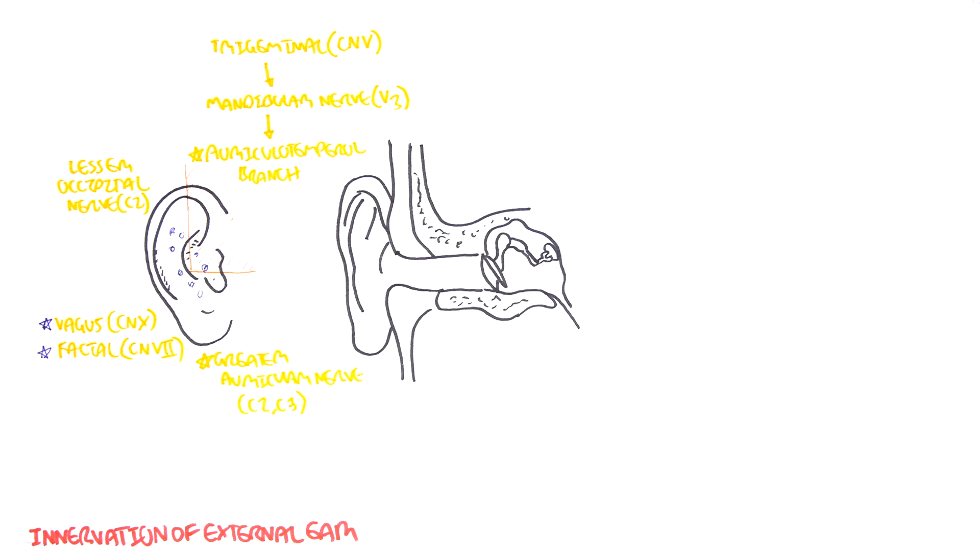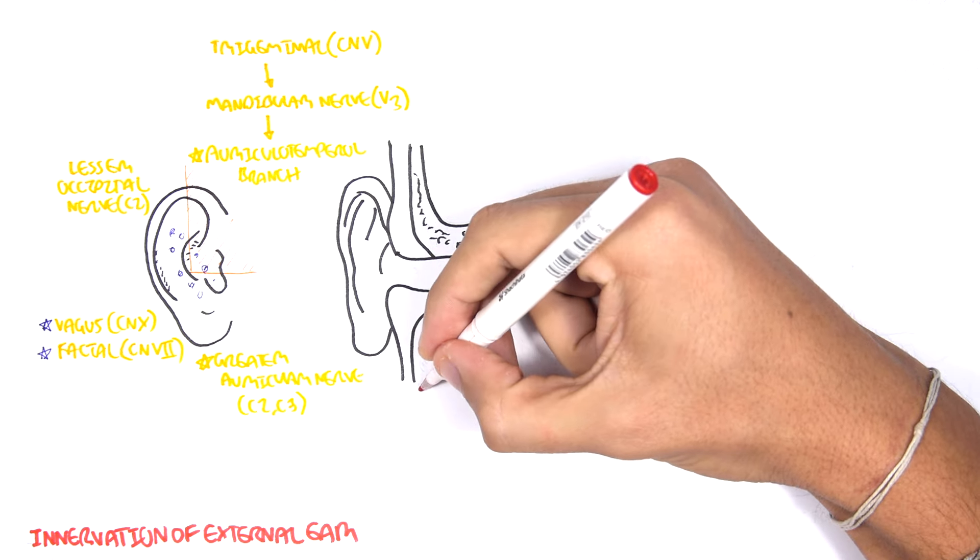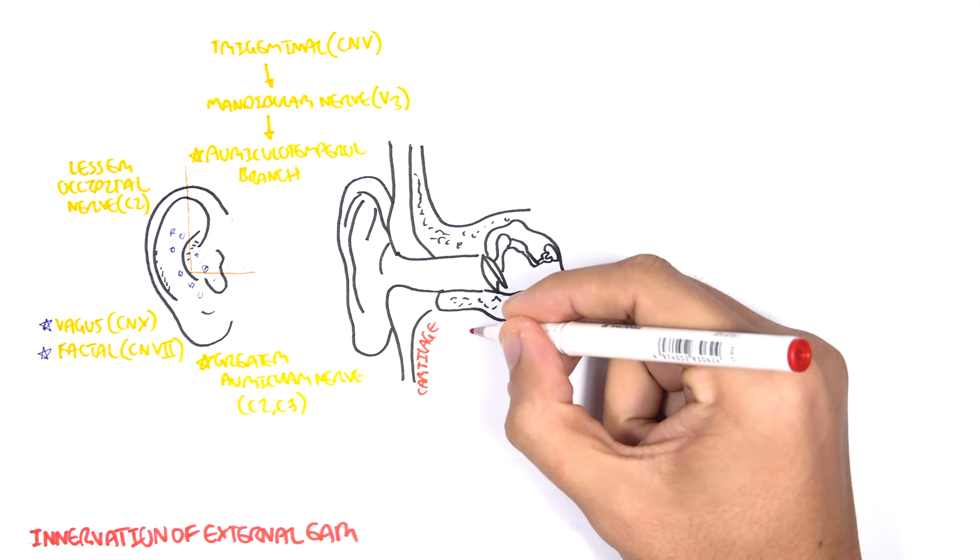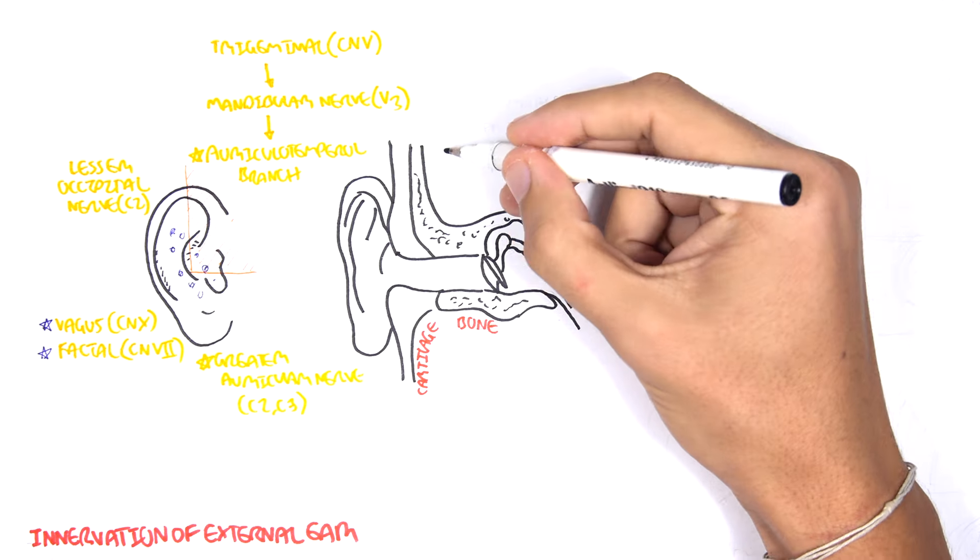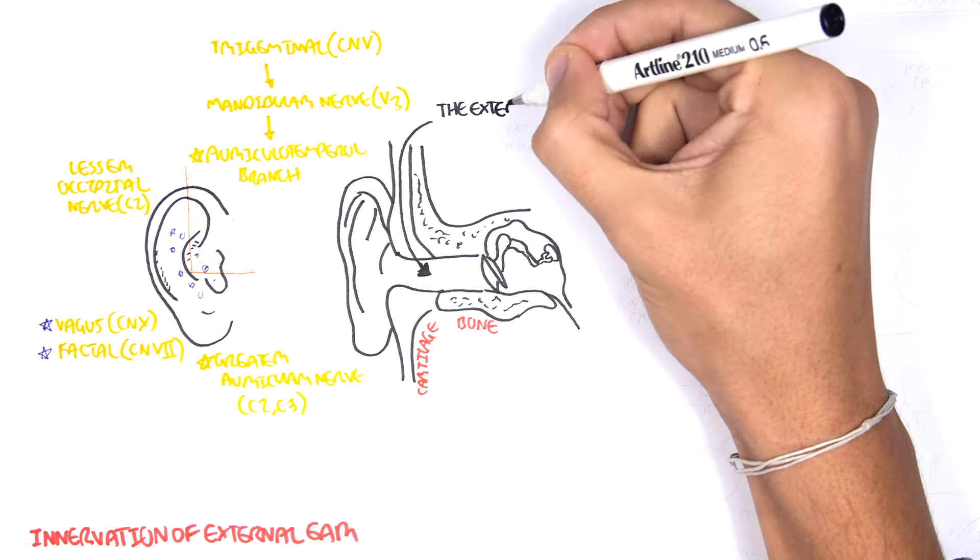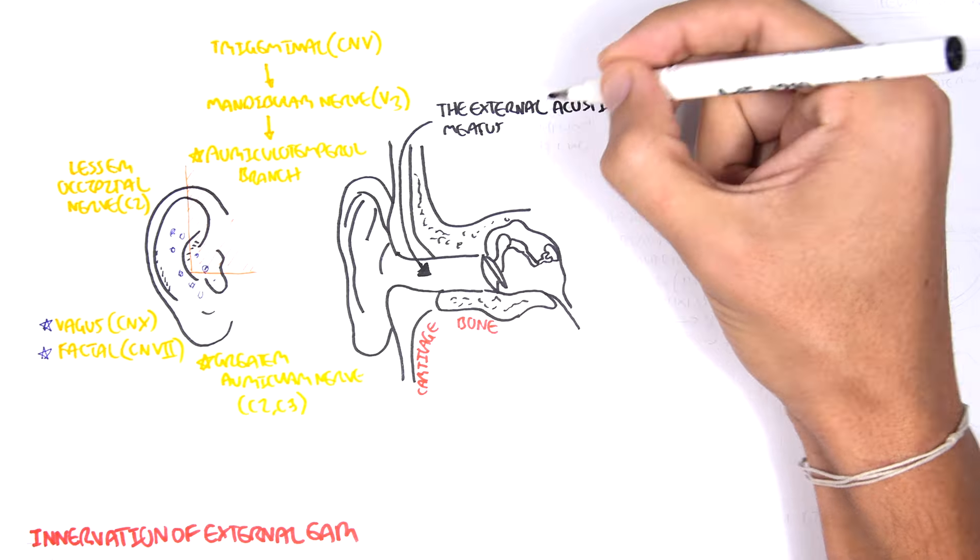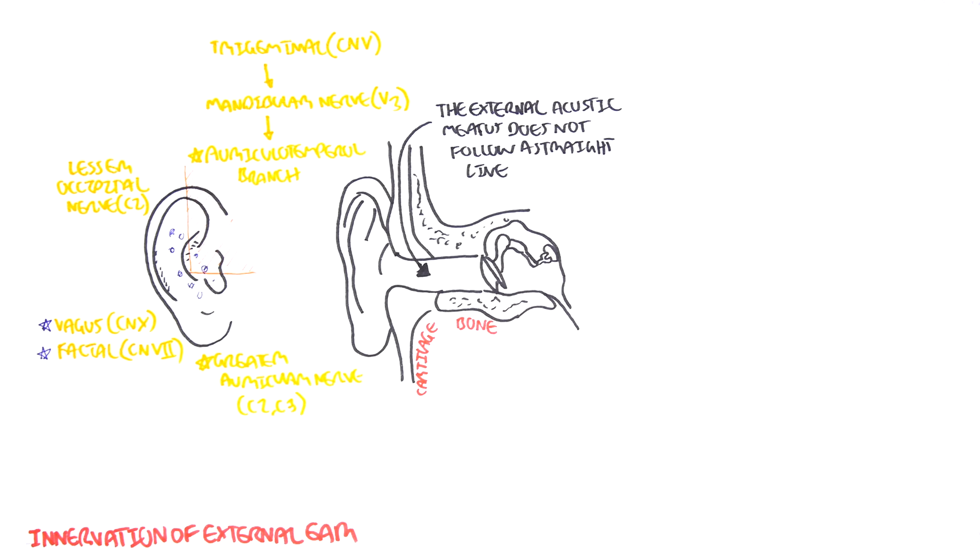Recapping, on the external acoustic meatus, the lateral two-thirds, the outer two-thirds is mainly made up of cartilage, whereas the medial one-third is bone. The external acoustic meatus does not follow a straight line, so you must pull the ear a certain way to examine the external ear properly.